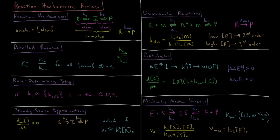Of course, the intermediate concentration does have to change because there's zero of it initially — it builds up and then eventually goes away. But this approximation is valid in the situation where, working with K1 and K2 in these two elementary steps, we find the steady state approximation is justified if K2 is much much greater than K1 squared times the initial concentration of the reactant.